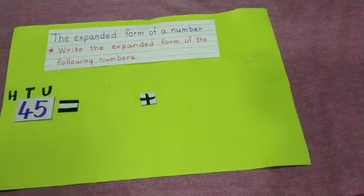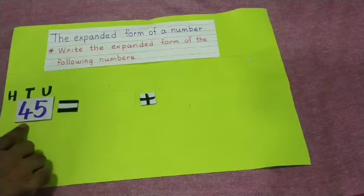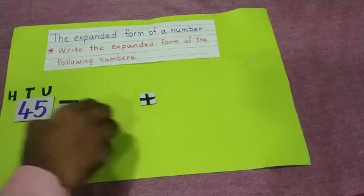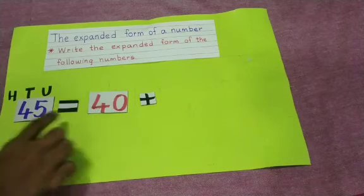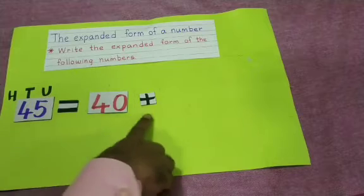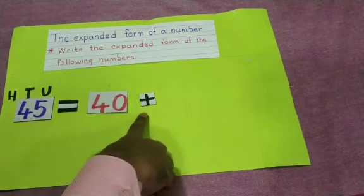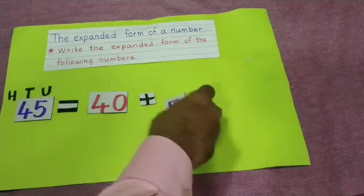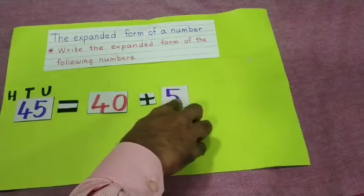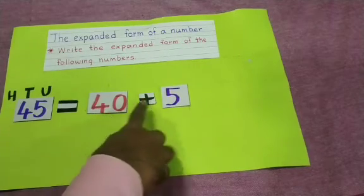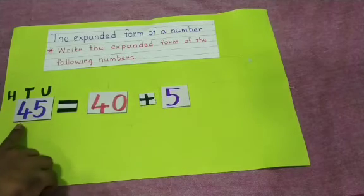Our next number is 45. 45 means, how many tens are there? 4 tens are there. 4 tens means 40. How many units are there? 5 are there. First you have to write the plus sign and then write 5. So 45 = 40 + 5.